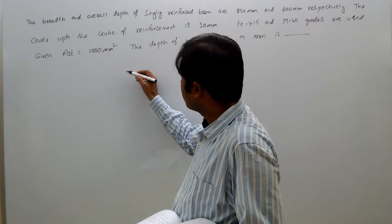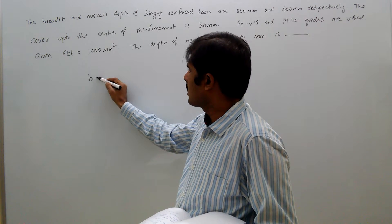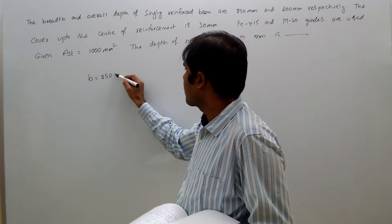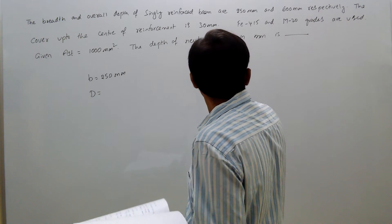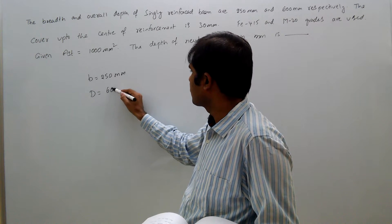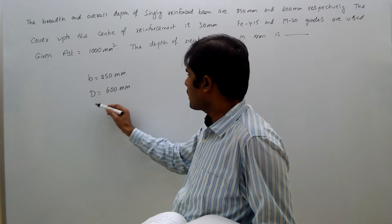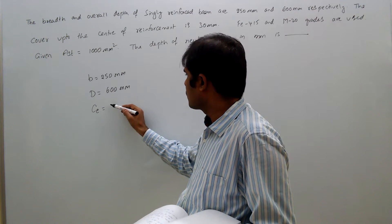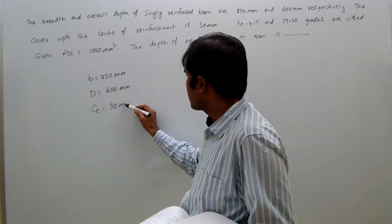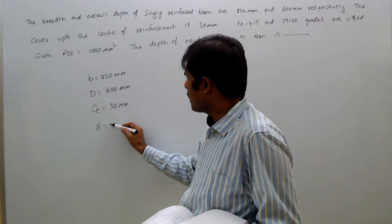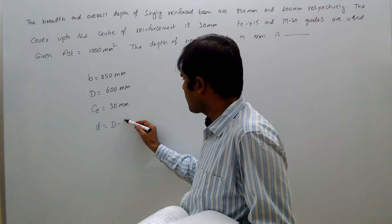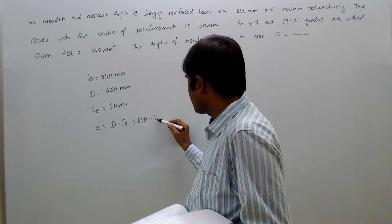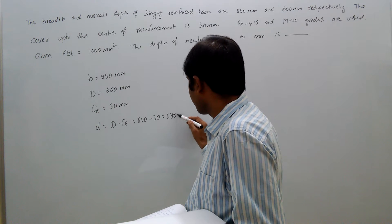The given data: B equal to 250 mm, overall depth equal to 600 mm, effective cover equal to 30 mm. So effective depth equals overall depth minus effective cover, that equals 600 minus 30, which is 570 mm.